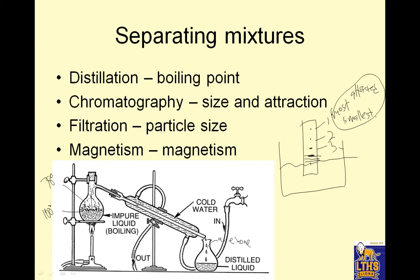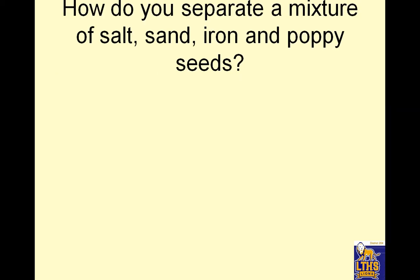Filtration separates by particle size. If my filter holes are a certain size, particles smaller than the holes pass through and larger particles do not. Magnetism is another method — hold a magnet near the mixture and some things are attracted to it and some are not.